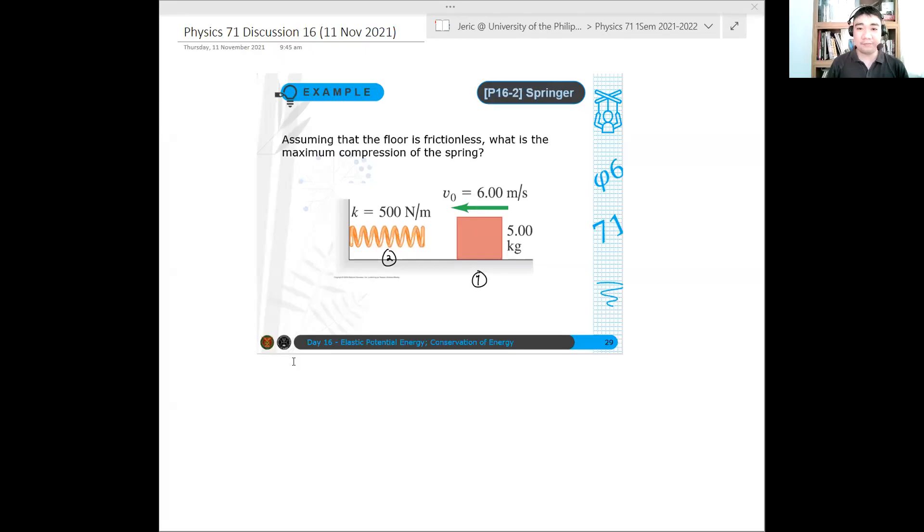So the first question for this discussion is, assuming that the floor is frictionless, what is the maximum compression of the spring? Given the quantities: the mass of the object is 5.00 kilograms, the initial speed of the system is 6.00 meters per second, and the spring constant is 500 newtons per meter.